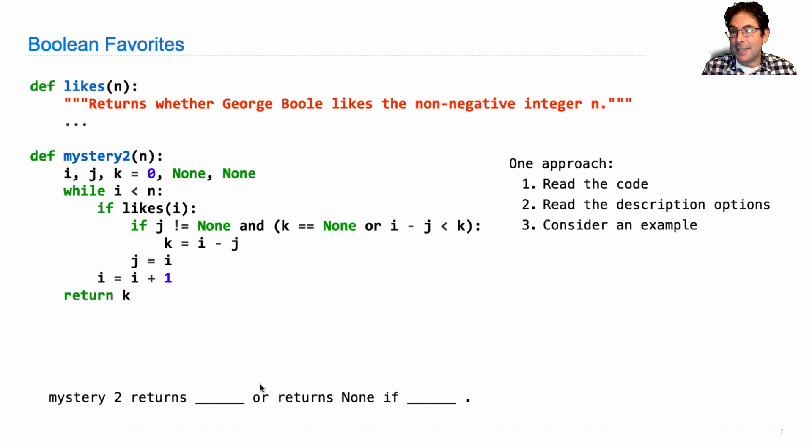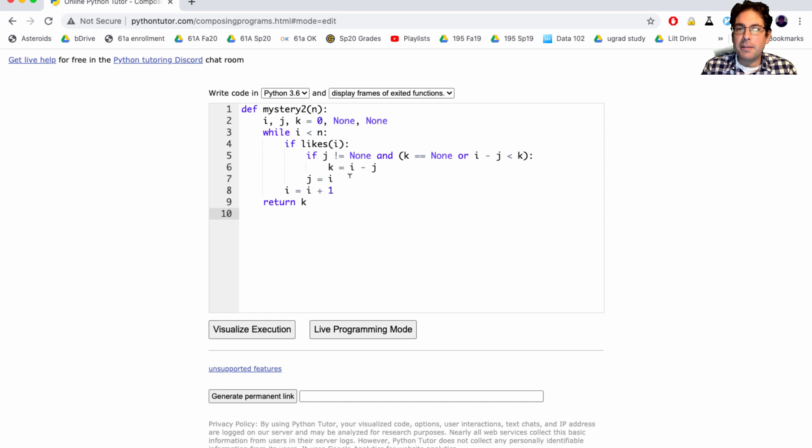And otherwise if k does get assigned to something that's not none, then we're going to describe that behavior here. But I still don't know how this works because there's some big mess in the middle. Maybe I should consider an example. And this one seems complicated enough that I could just go ahead and use Python tutor in order to do it. So let's go ahead and paste in this code and decide what we're going to call it on. How about eight again? That seemed reasonable.